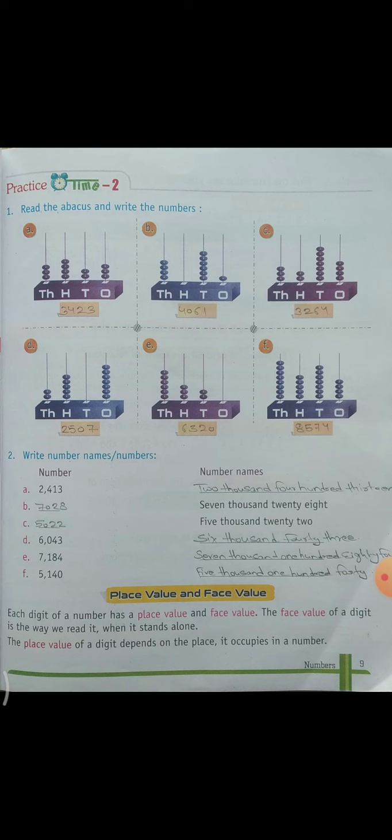Come to b part. B part ke andar dhe rakha hai 7028. To number likha hai. To 7028. So aise apne iske remaining part bhi karayenge. Now come to next.